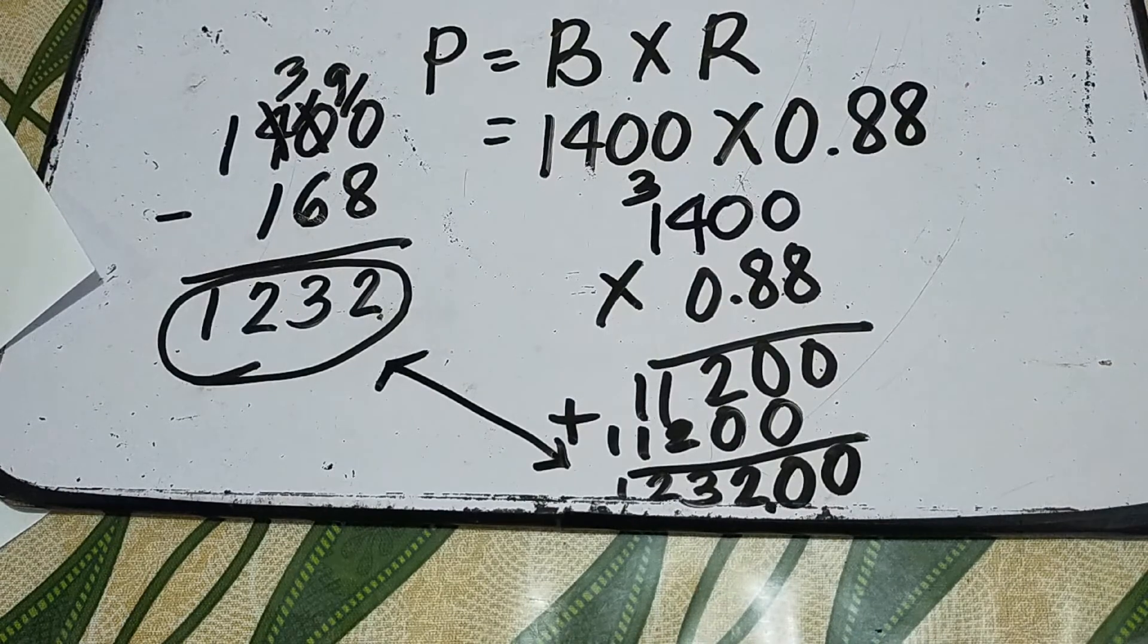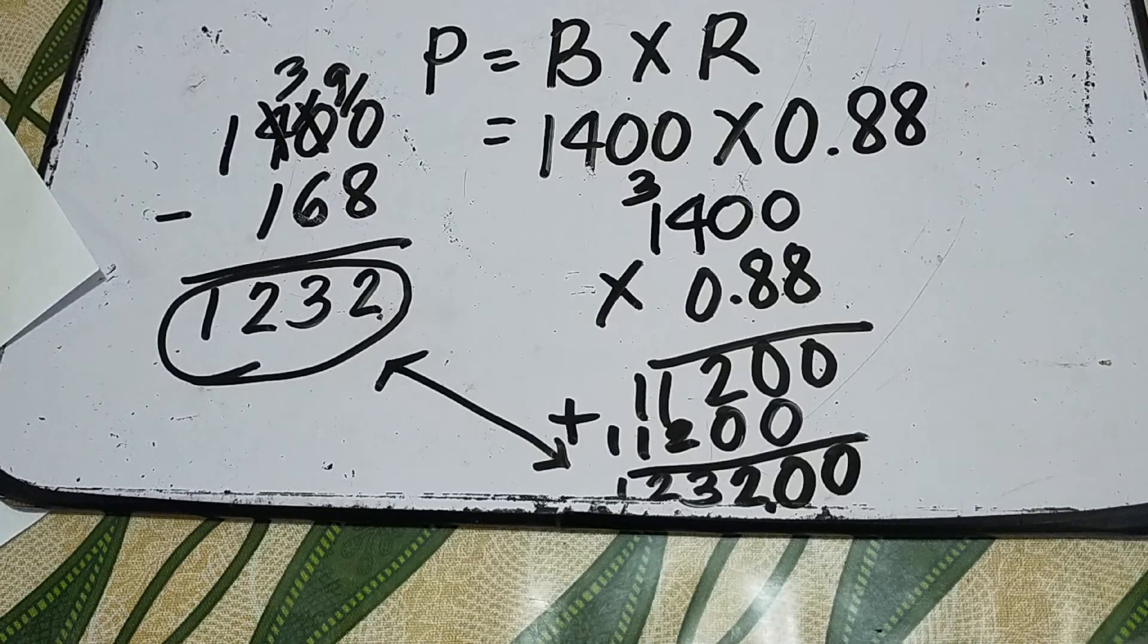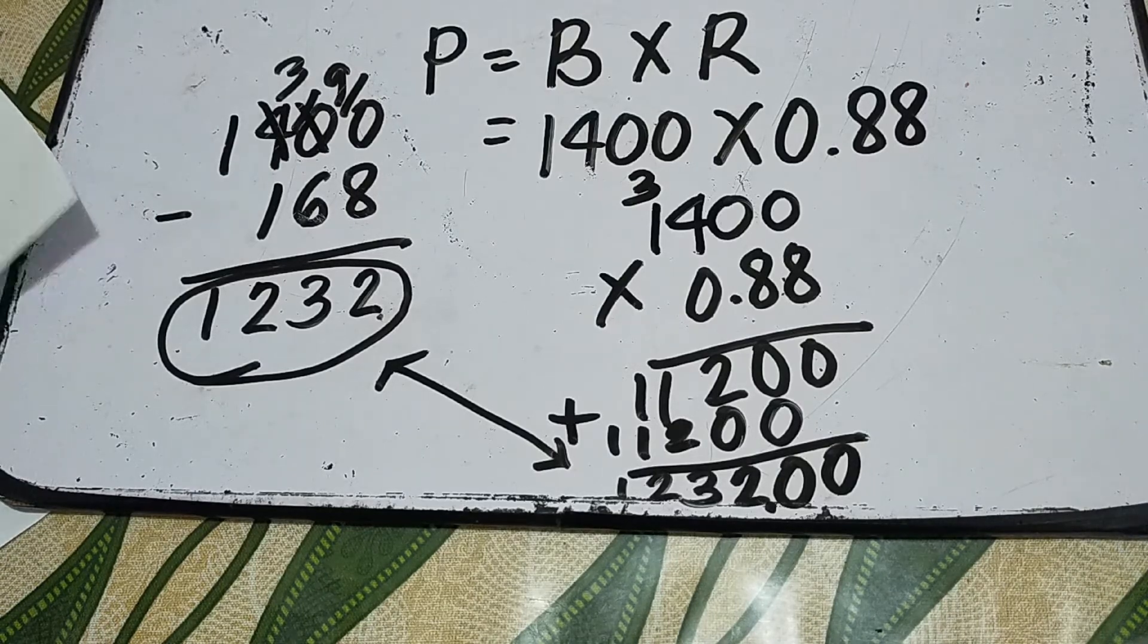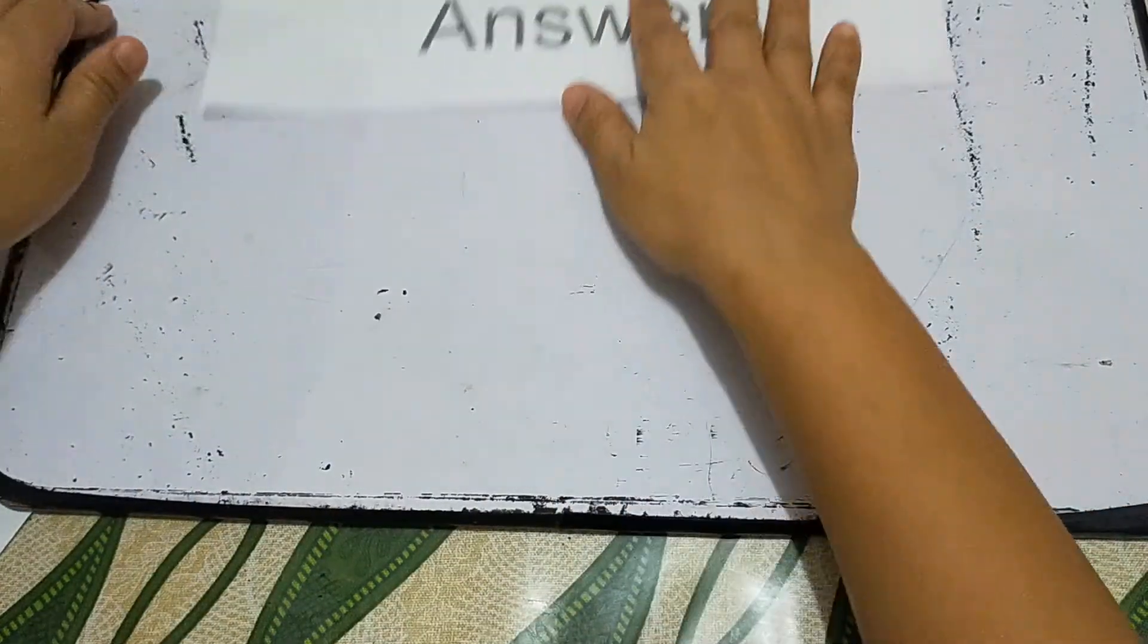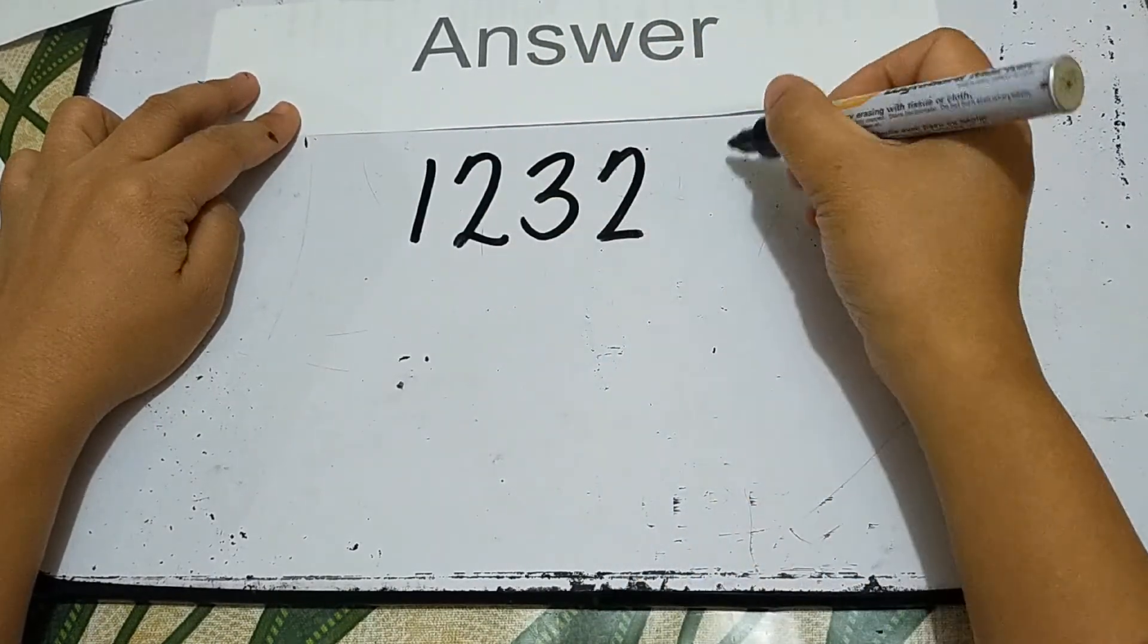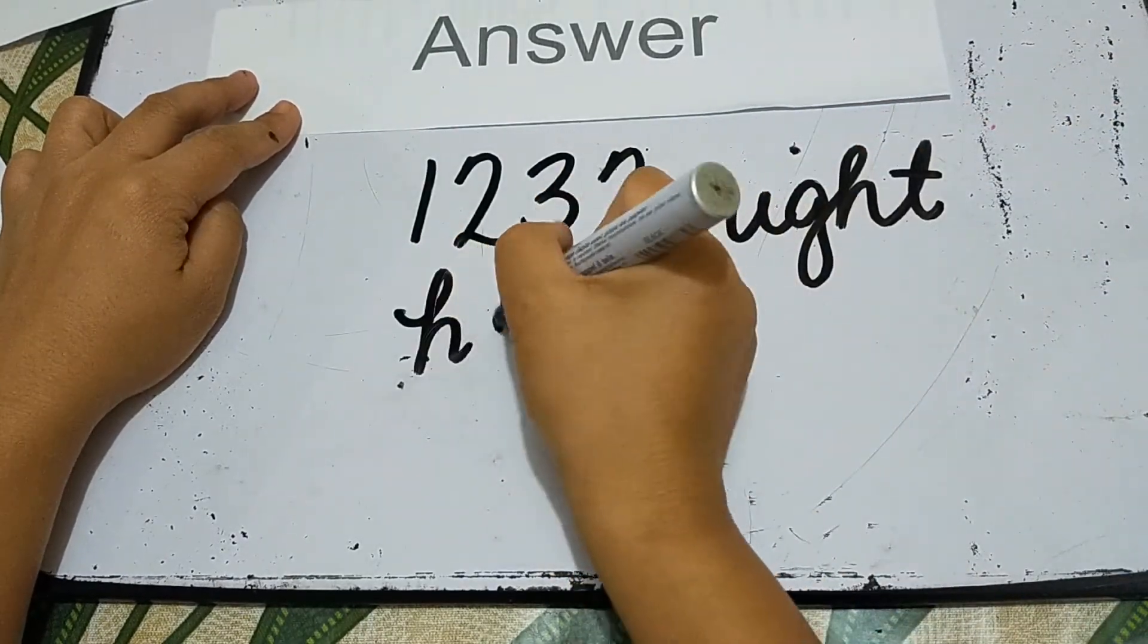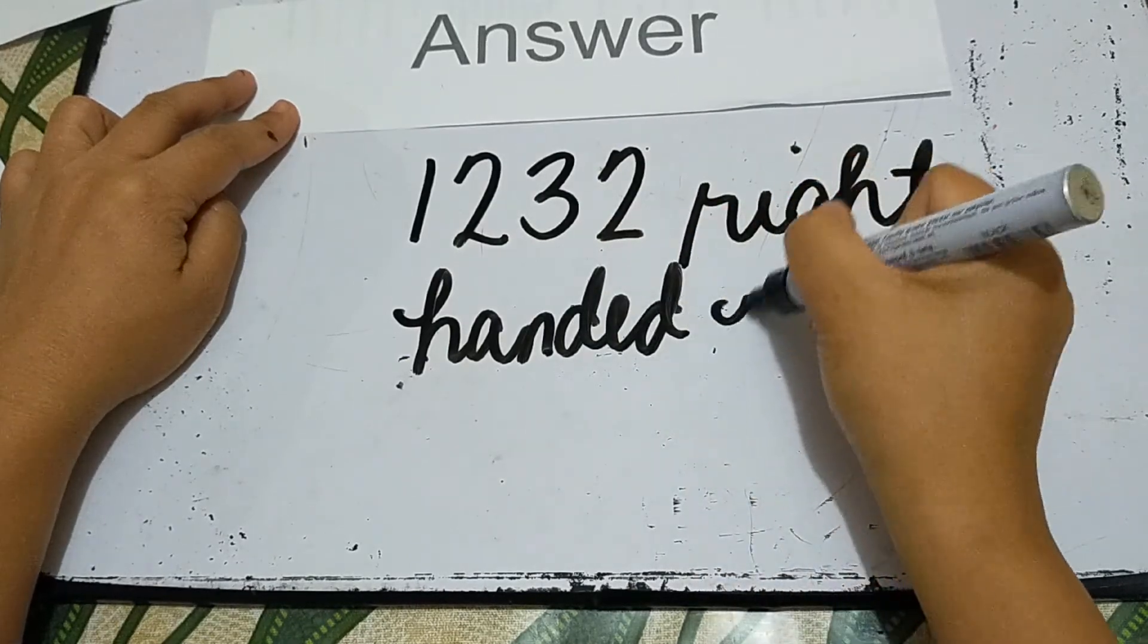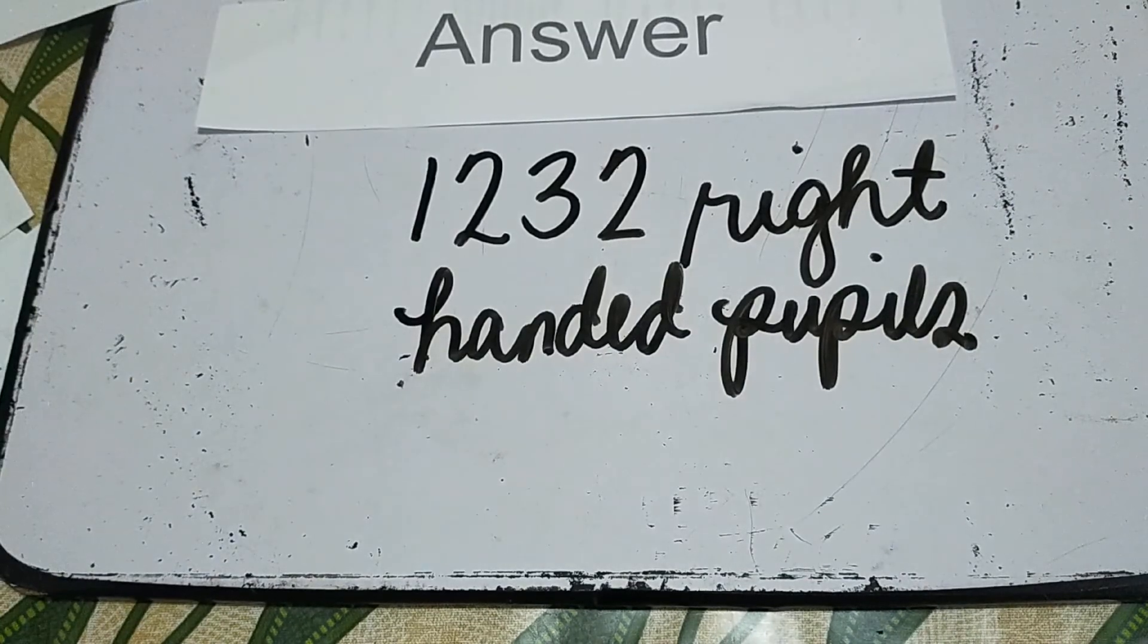That means our answer is 1,232 right-handed pupils. That's all for now. Thank you for watching.